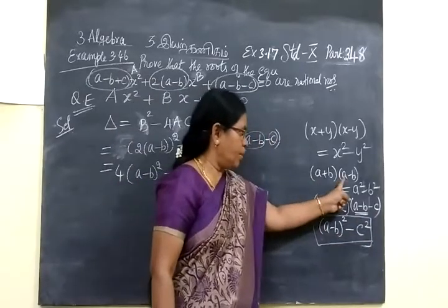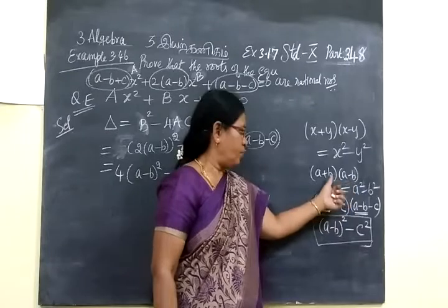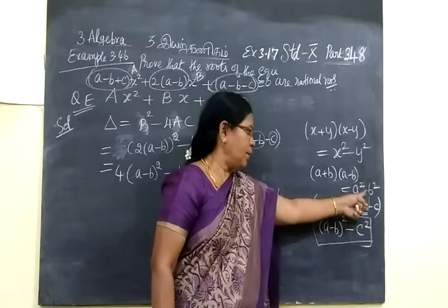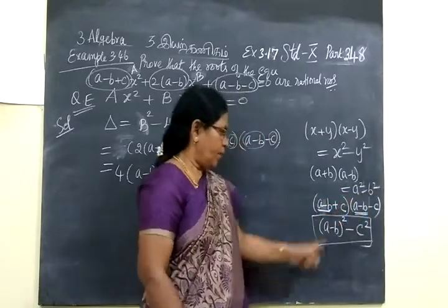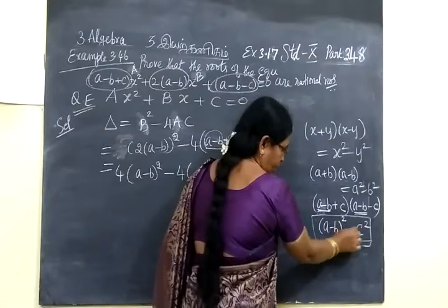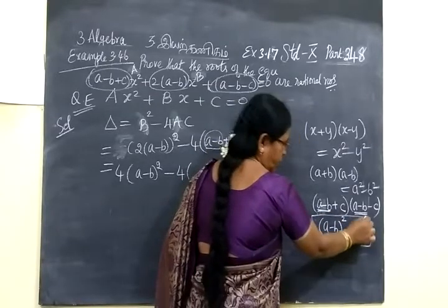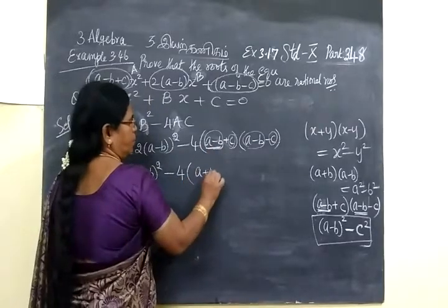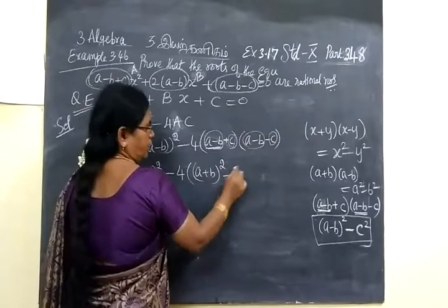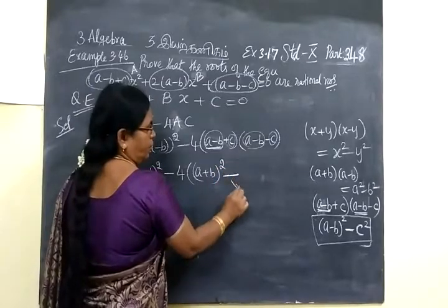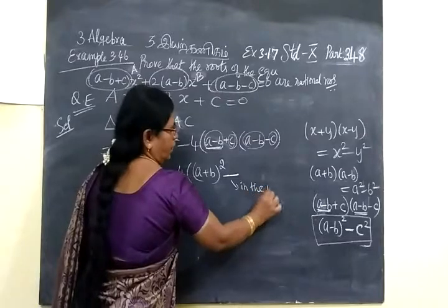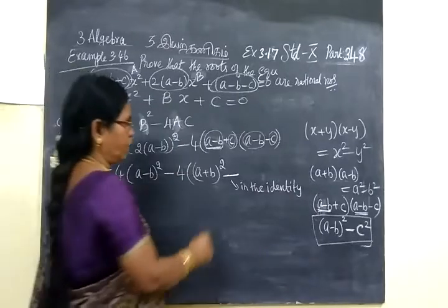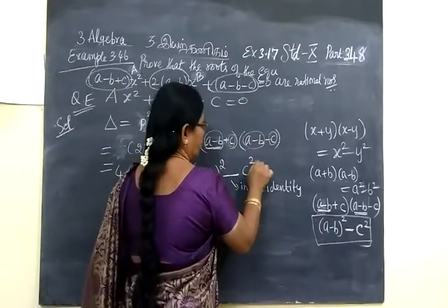If A plus B into A minus B — one plus and one minus. If you find, you can write: first term square minus second term square. In the same way, first term square minus second term square. You complete the first term: A plus B square, minus — this minus will come in the formula. It is one of the identities. The identity is the minus, so minus second term square, C square.